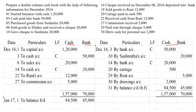Otherwise, we will record only cash-related transactions, and whenever cash comes in it will be debited, whenever cash goes out the account will be credited — all the other things remain the same. The first transaction is started business with cash. The owner of the business is starting the business by introducing cash, so cash comes into the business in the form of capital. To capital account — write the amount in the cash column, not in the bank column, because cash comes into the business.